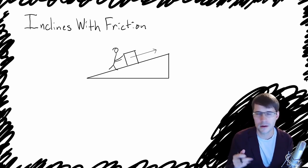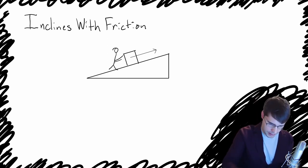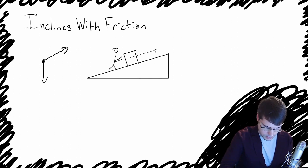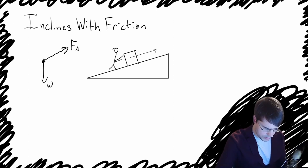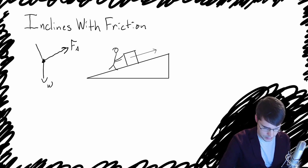Today we're going to start off as we always do by drawing the force diagram. We can look at this situation and we know that we're going to have a weight pointing straight down. There's an applied force up and to the right, so we'll call that FA. We're going to have a normal force, and the normal force is going to point perpendicularly away from the surface that the block is on.